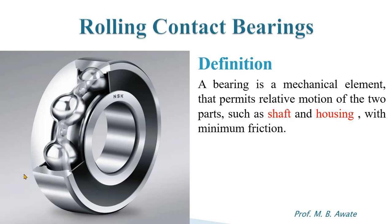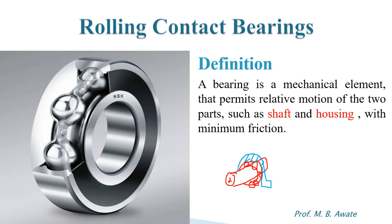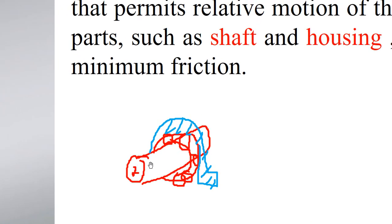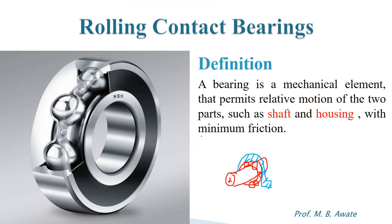Consider that there is a shaft, and this shaft has been supported in a bearing. The bearing permits the relative motion between two parts — that is, this particular shaft and housing. So the housing will be like this for the bearing. Bearing permits the relative motion between the shaft, shown in red color, and the housing, but with minimum friction.